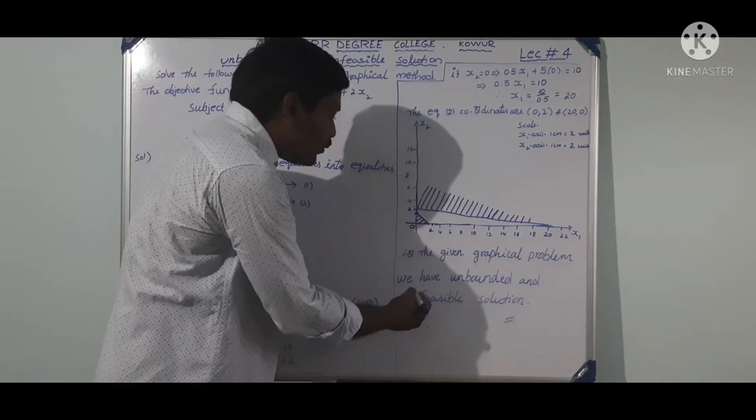For equation 2, substituting x2 equal to 0: 0.5x1 plus 5 into 0 equals 10, that implies 0.5x1 equal to 10, therefore x1 equal to 10 divided by 0.5, which equals 20. The coordinates are (0, 2) and (20, 0).